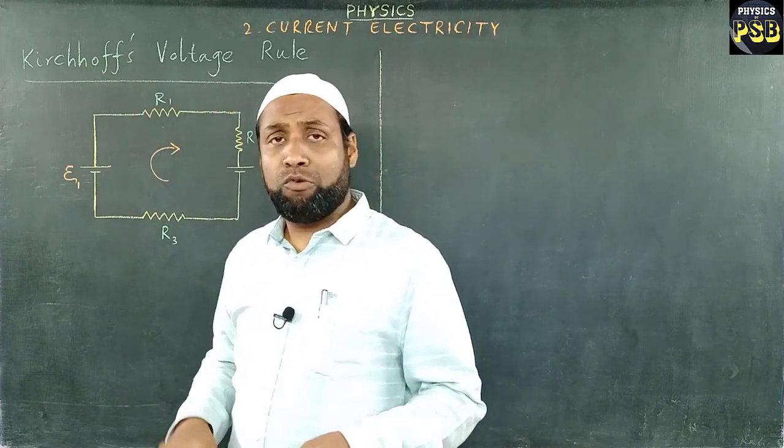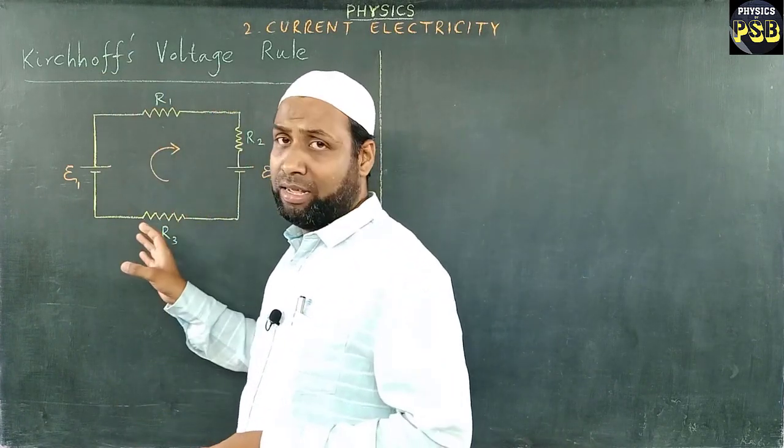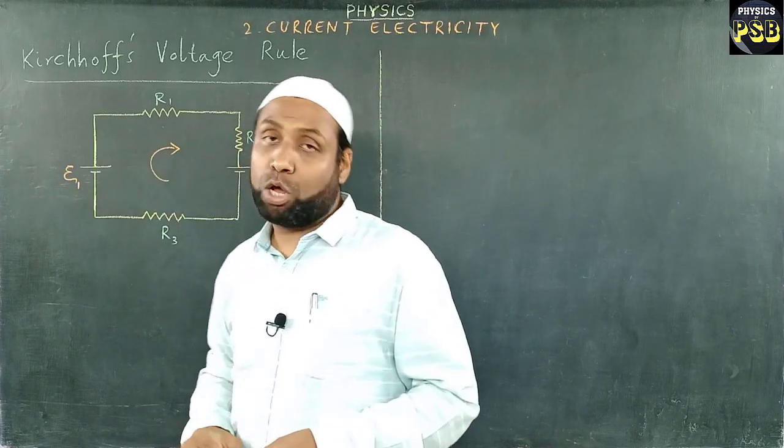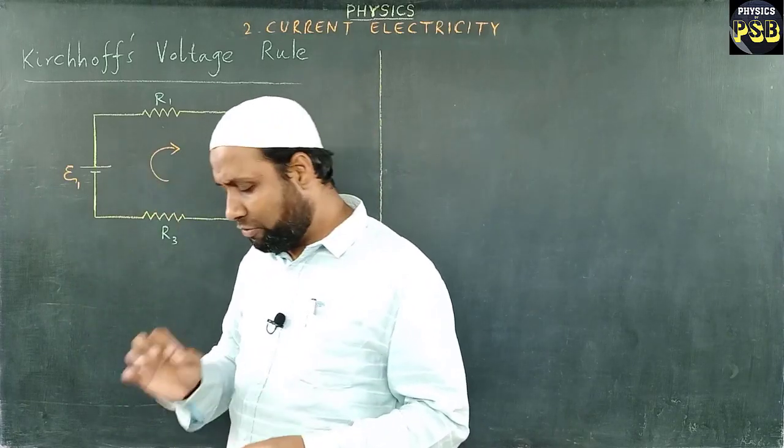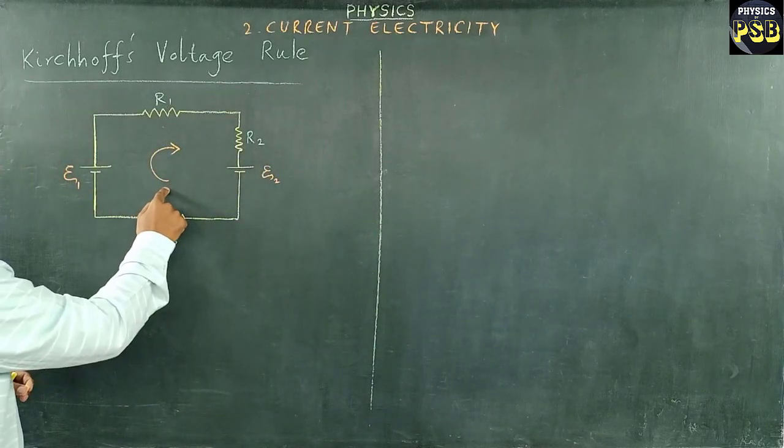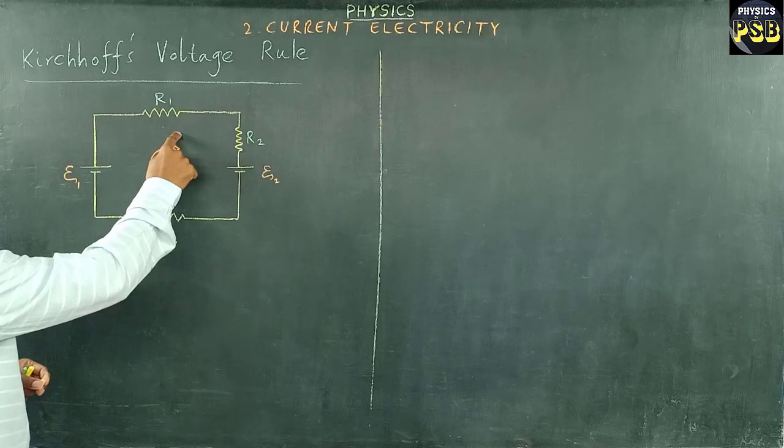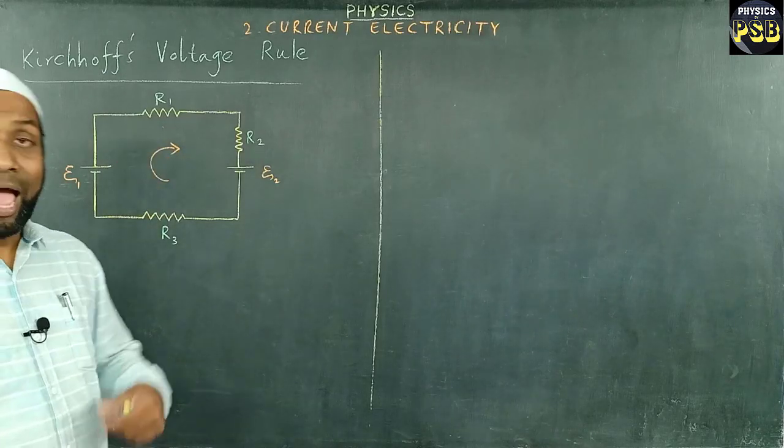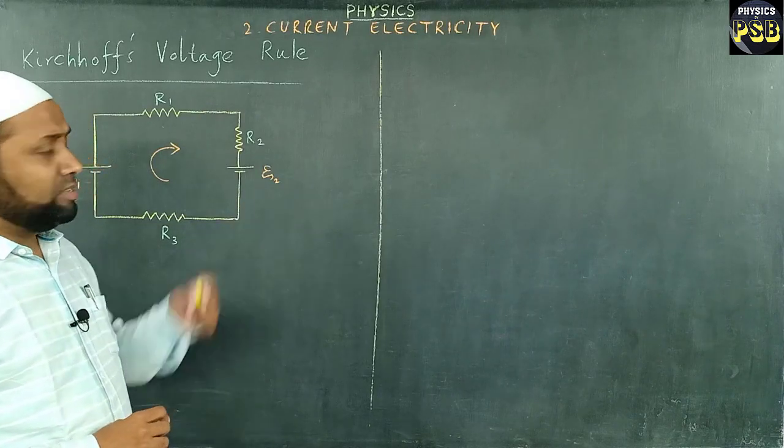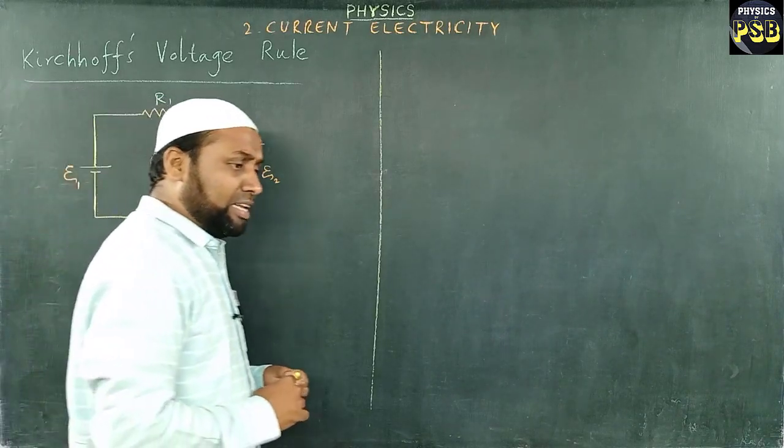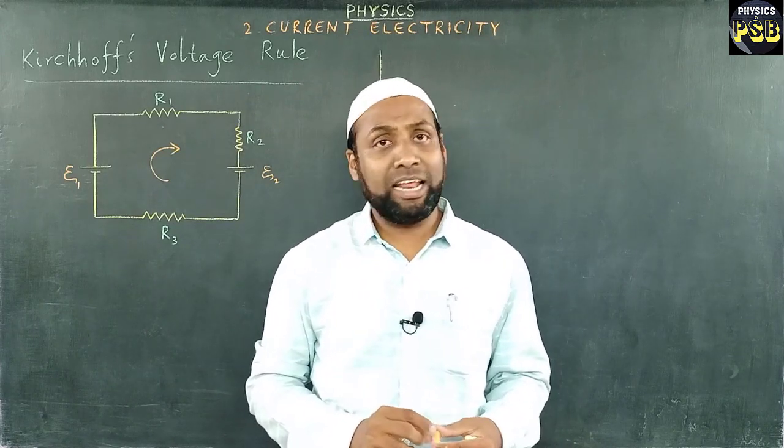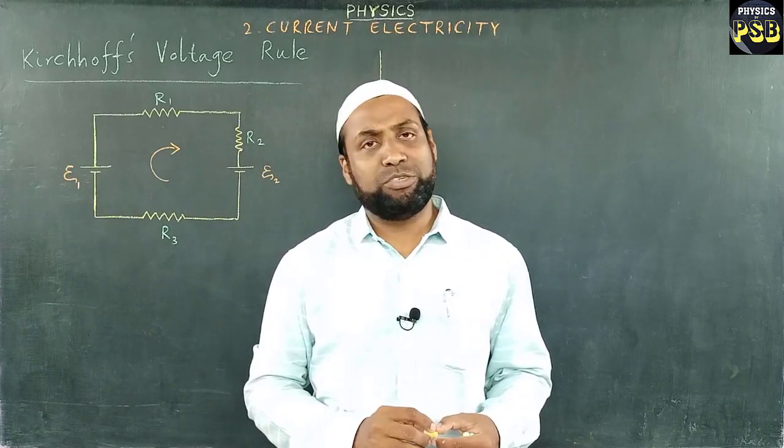To apply the Kirchhoff's voltage rule, we assume the direction of current either in clockwise or in anti-clockwise direction. If we assume direction of current is in the direction of actual current, then the current is taken as positive. If it is not so, then it is taken as negative.